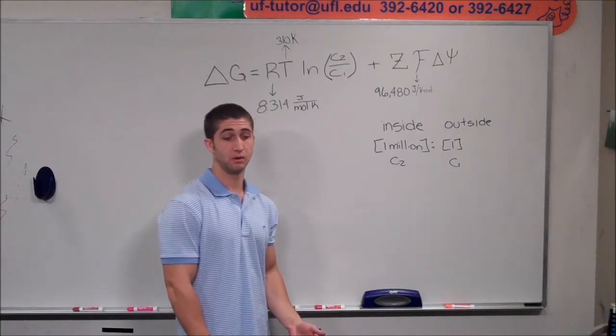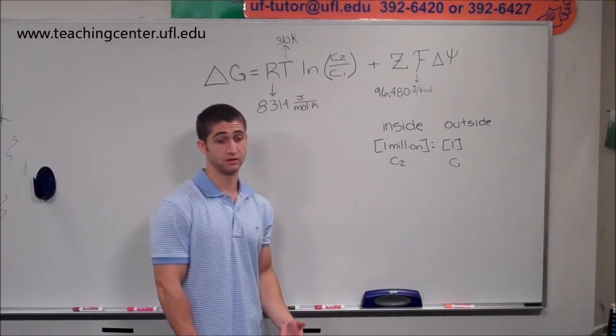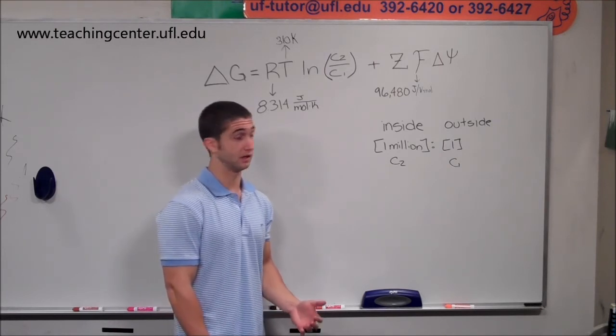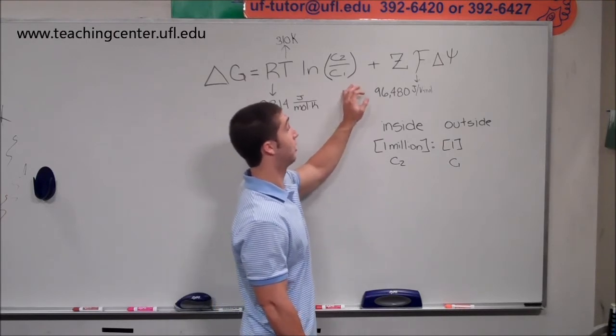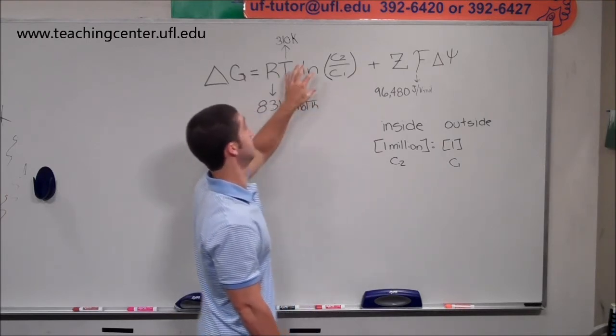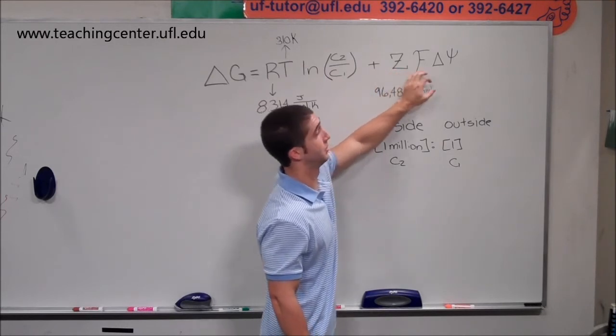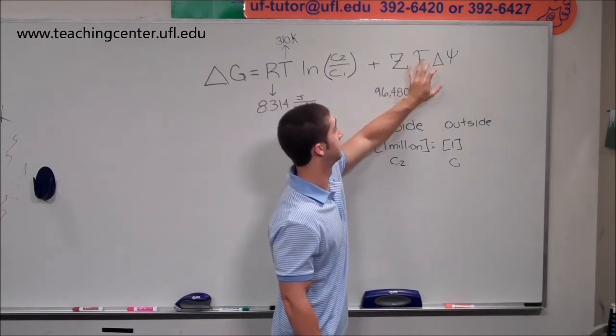All right, this is 10 part B on Dr. Long's exam review. It's asking, what if the membrane potential is 50 millivolts negative inside? So beforehand, for part A, we just had to calculate and use this part of the equation because this part automatically went to zero because the membrane potential, they said, was zero. So this automatically went to zero.